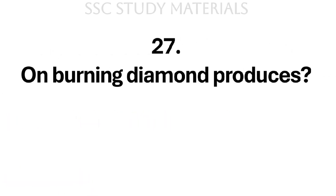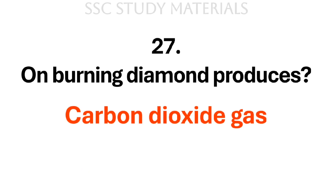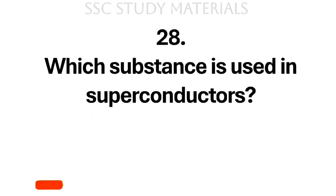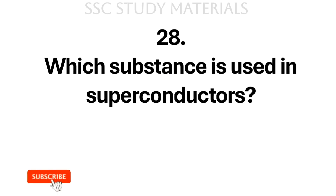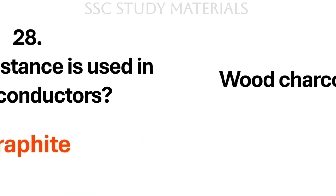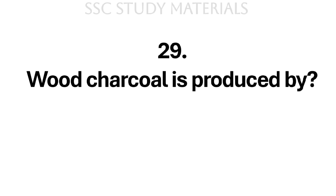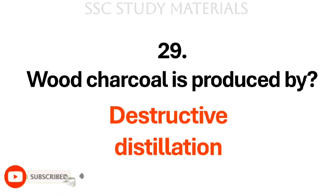Question No. 27: On burning, diamond produces? Answer: It produces carbon dioxide gas. Question No. 28: Which substance is used in superconductors? Answer: Graphite. Question No. 29: What is charcoal produced by? Answer: Destructive distillation.